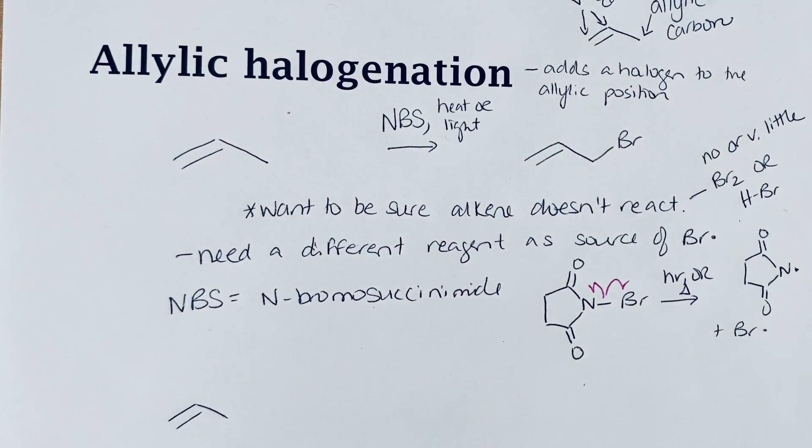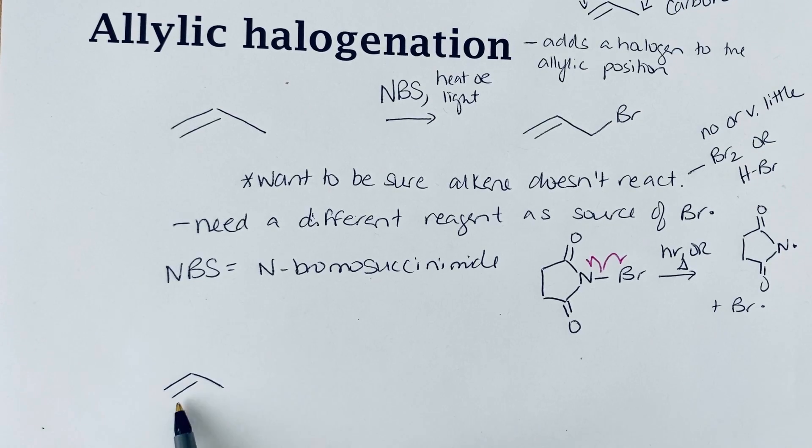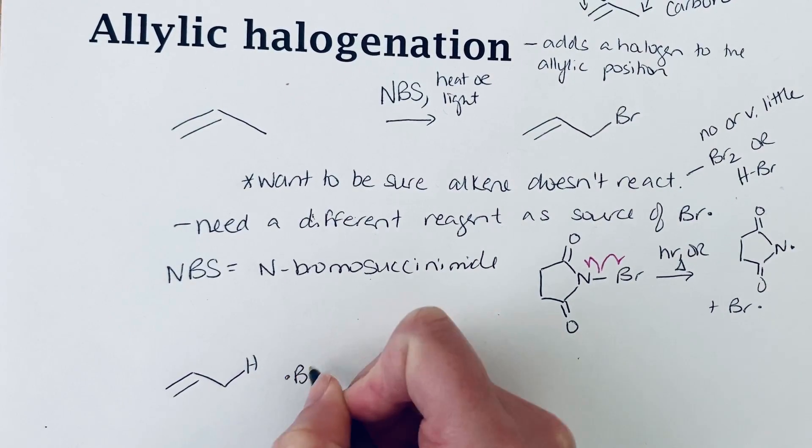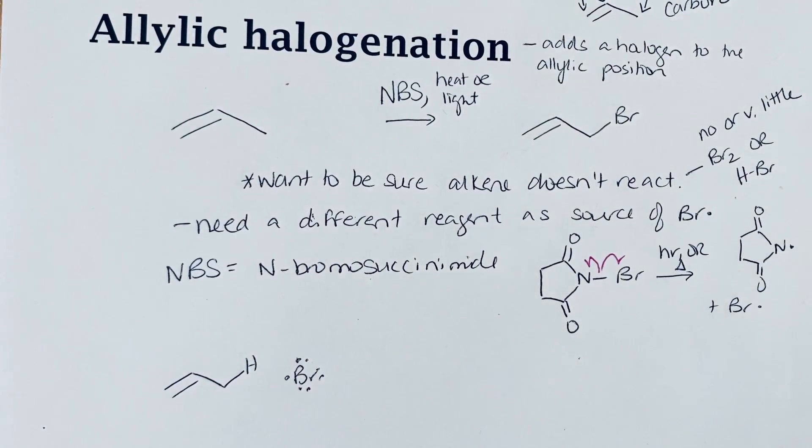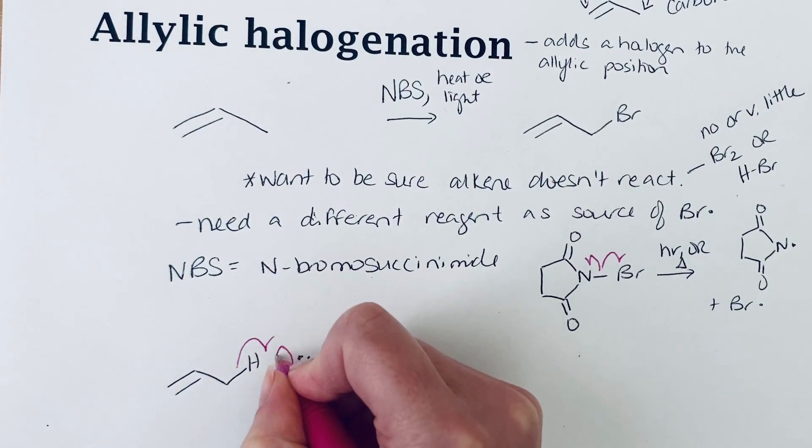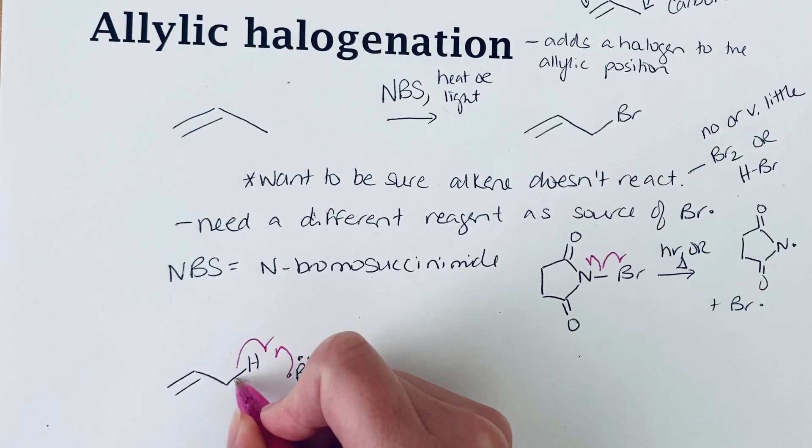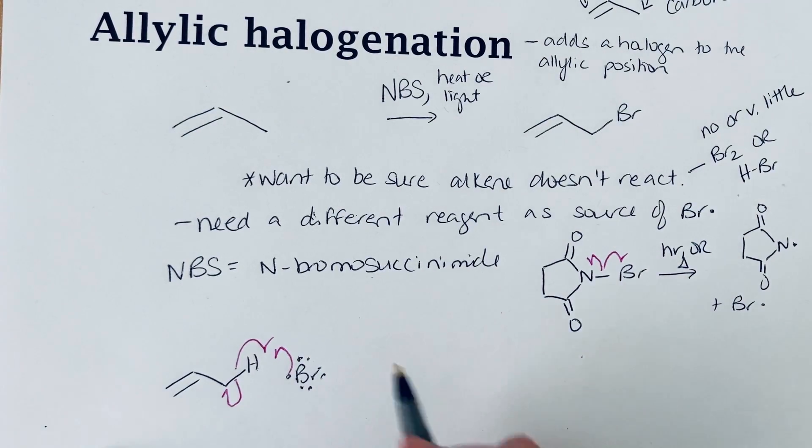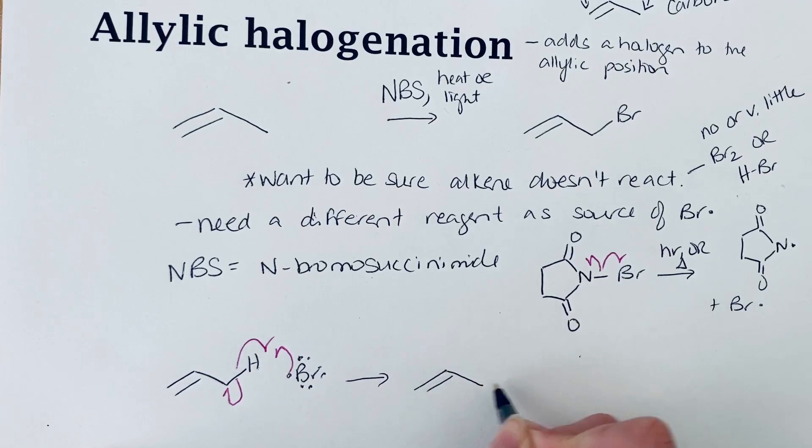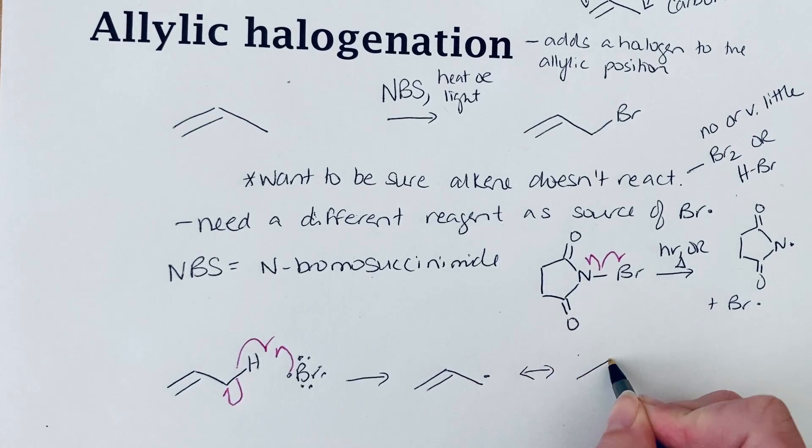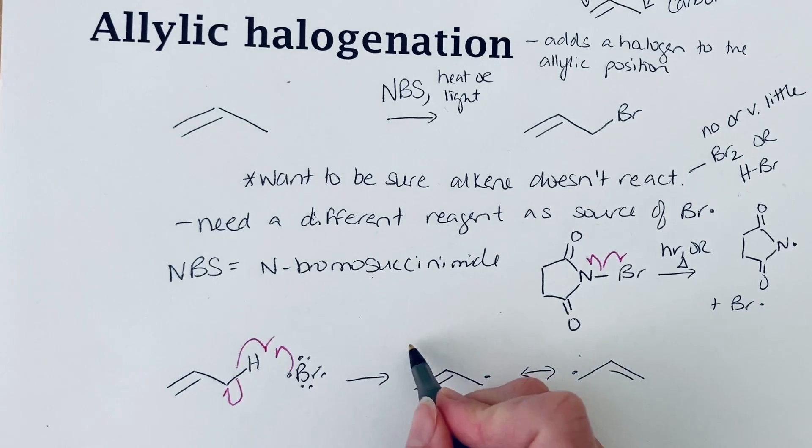Once we have it formed, we're going to abstract a hydrogen from this molecule to give us the most stable radical that we can form, which in this case will be at the allylic position where it can be resonance stabilized. The bromine radical can combine with the hydrogen and the other electron from that carbon-hydrogen bond will end up on the end carbon atom, giving us this allylic radical which is resonance stabilized. We can move it to the other side of the allylic system.